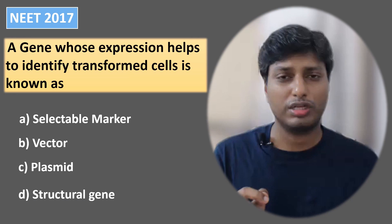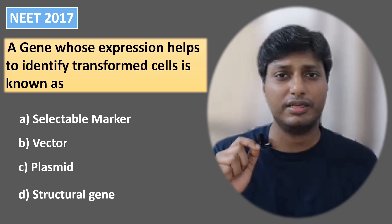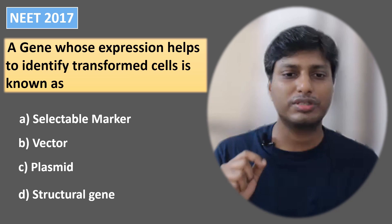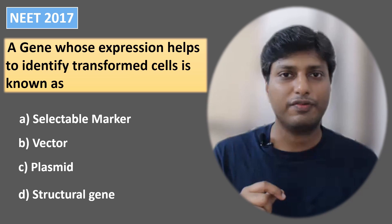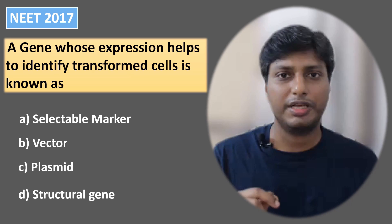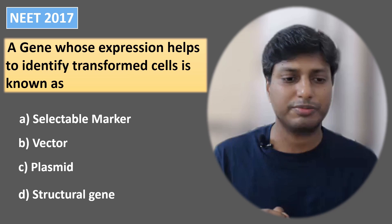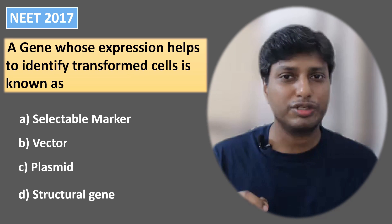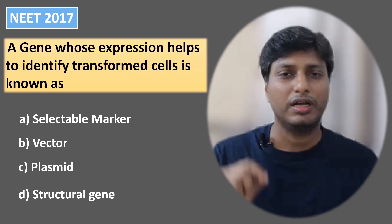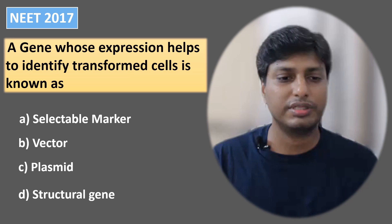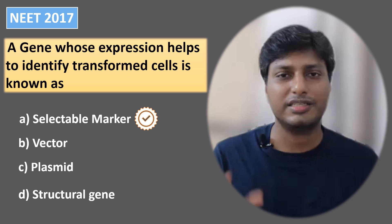Based on this concept, there was a question asked in NEET 2017. The question is: a gene whose expression helps to identify transformed cells is known as — option A: selectable marker, option B: vector, option C: plasmid, option D: structural gene. Since you have now understood the concept of a cloning vector and its different features, you can easily find out the answer. The right answer is selectable marker.